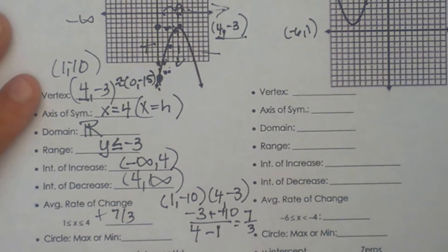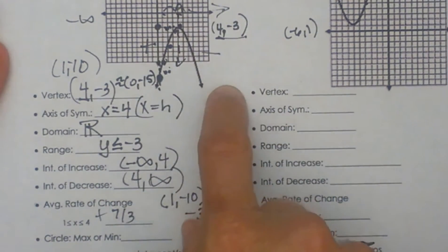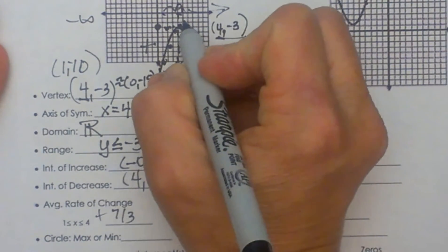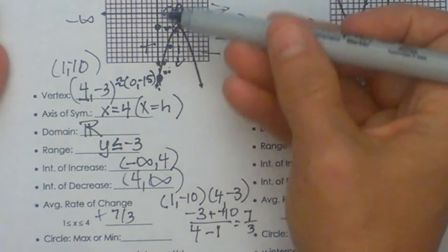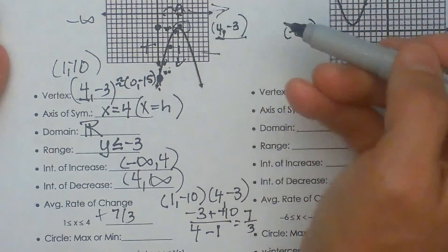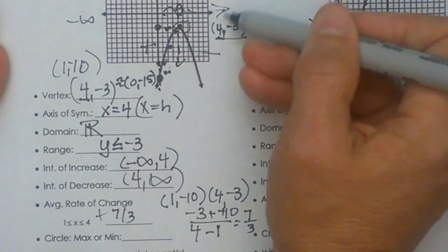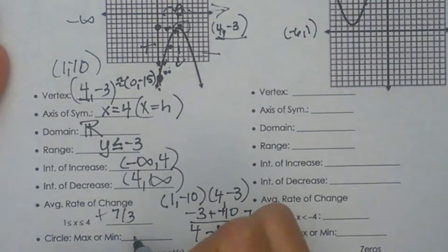Now let's look at our max and mins. Because this is a down facing parabola we have a maximum value right here at the vertex. Well max's and mins are read as up down coordinates which is a y coordinate. So we are going to say the maximum value here is negative 3. So we have a max at negative 3.